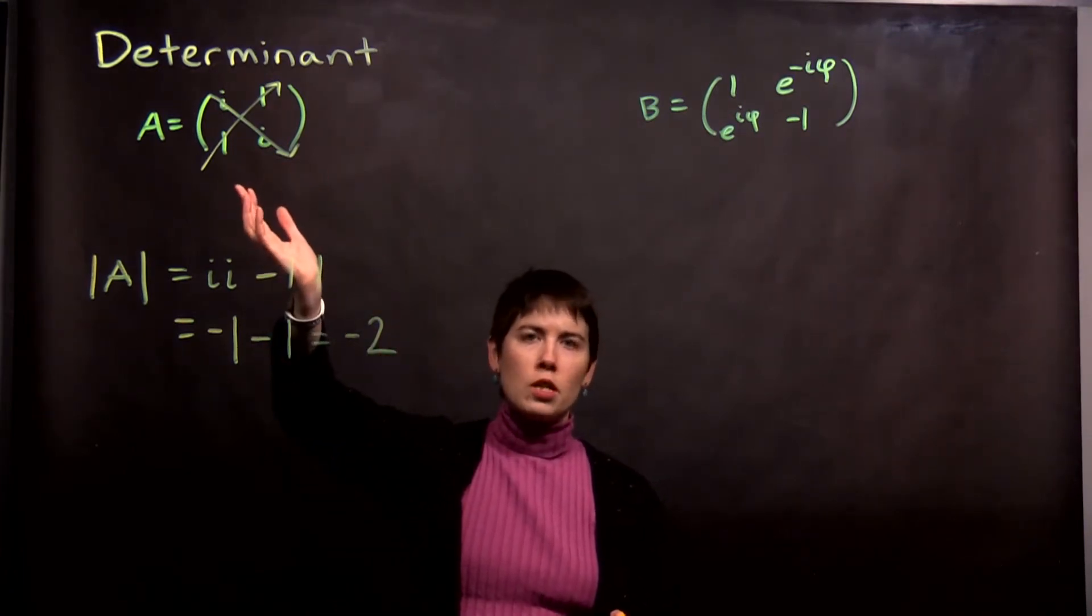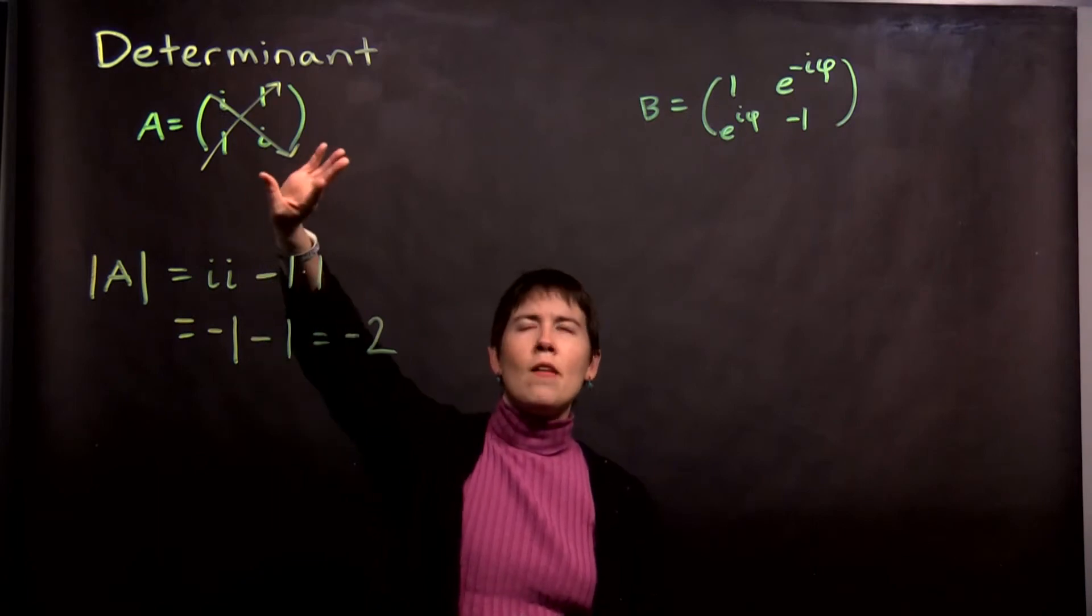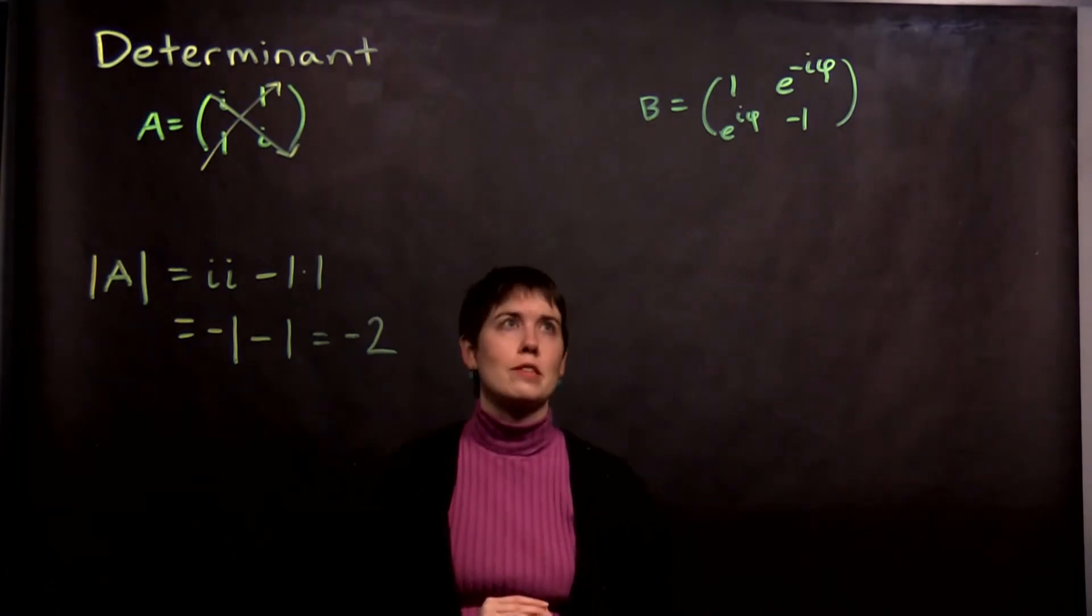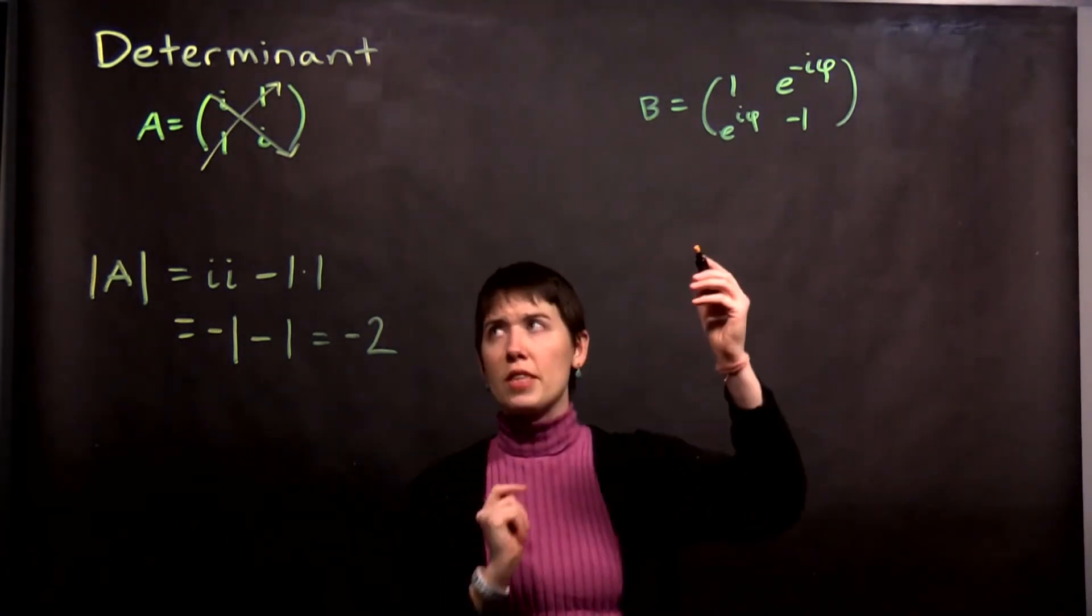Usually when we're calculating determinants, that matrix looks a little bit different, or we're then going to do something after this. But that's the process. Now let's repeat that with B.